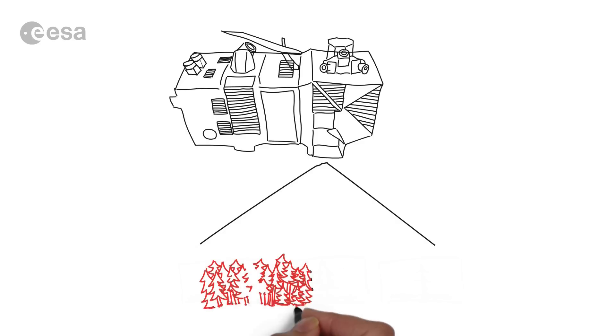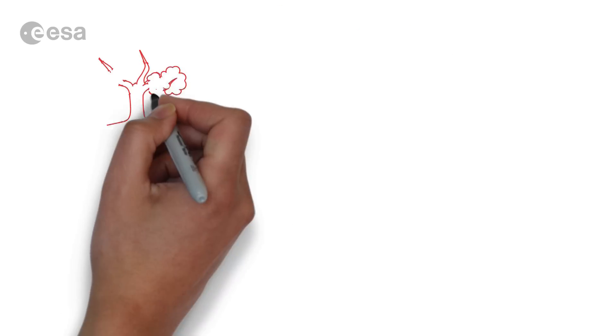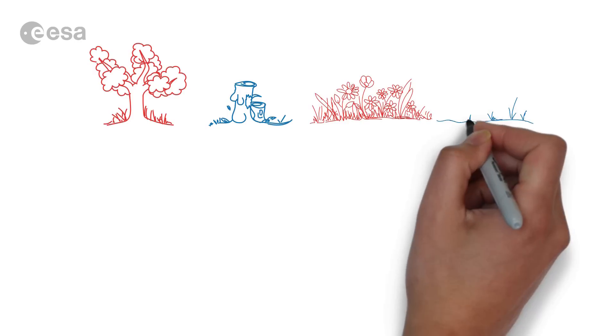For example, Sentinel-2 can see where forest is actually cut and how this affects the habitats. It can distinguish between a healthy tree and a dead one, due to its infrared footprint, and between a lush meadow and a dry one.